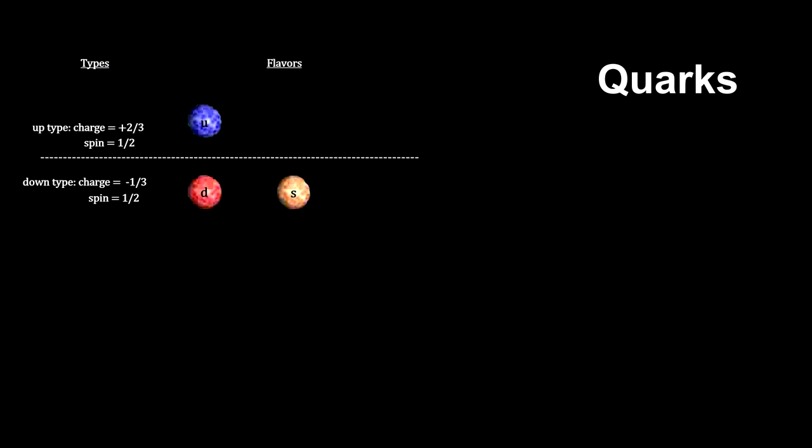In addition to the up, down, and strange quarks, we have discovered the charm, top, and bottom quarks for a total of six.